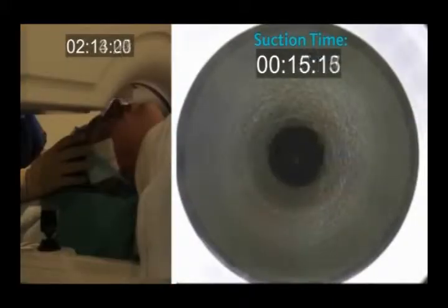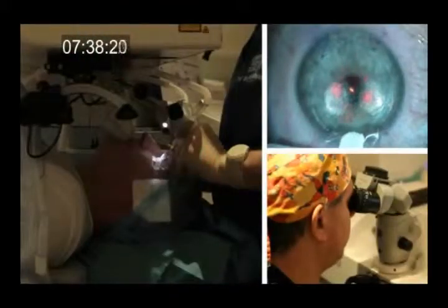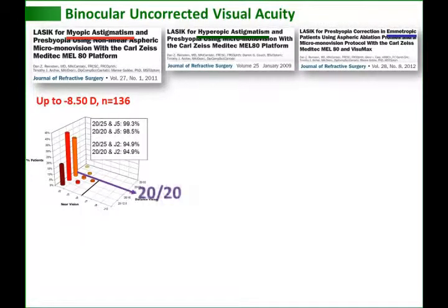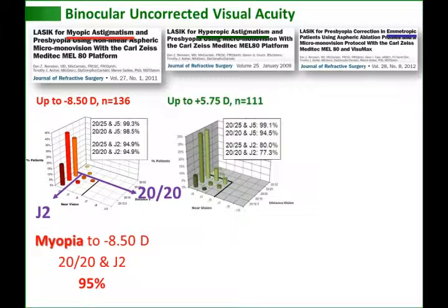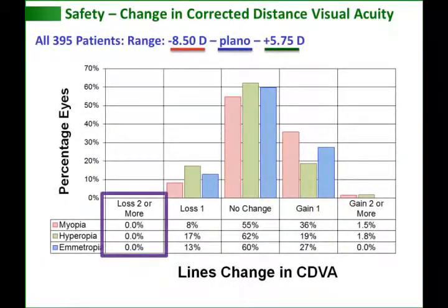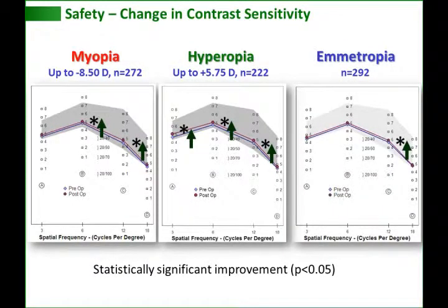Modified monovision is performed as a standard LASIK procedure with a wide range of refractions that can be corrected simultaneously. Published results reported at one year post-op show that the binocular uncorrected vision was 20/20 or better at distance, and J2 or better at near in 95% of myopic patients, 77% of hyperopic patients, and 95% of emmetropic patients. No eyes lost more than one line of corrected distance visual acuity, and contrast sensitivity was either the same or better than preoperatively. The small anisometropia is instantly reversible simply with spectacles or by a standard LASIK retreatment, which can also be performed if shifts in refraction occur over the years.